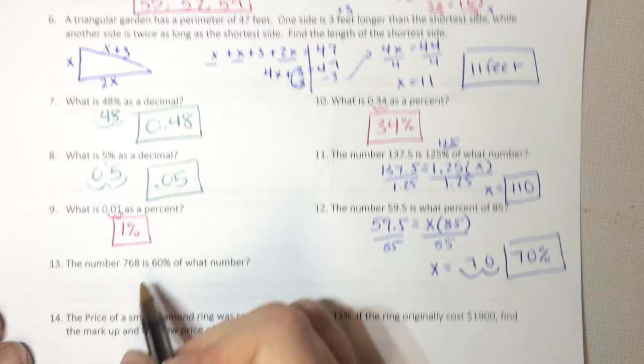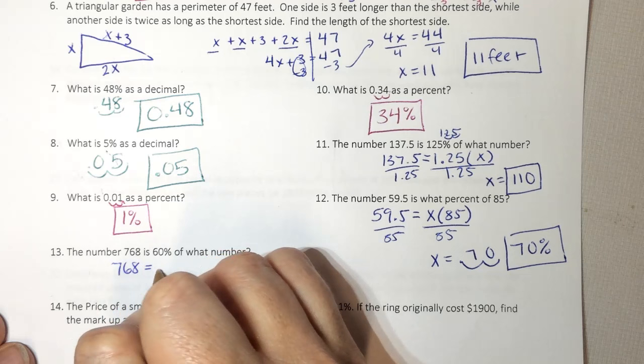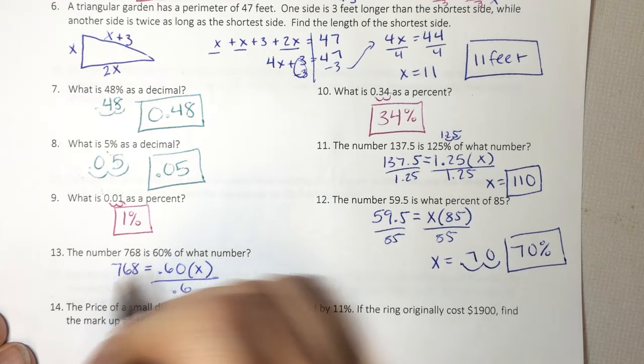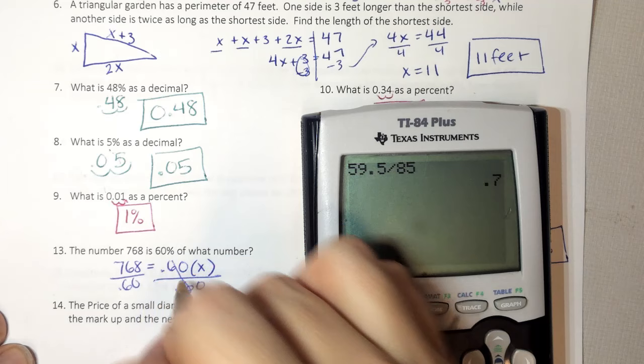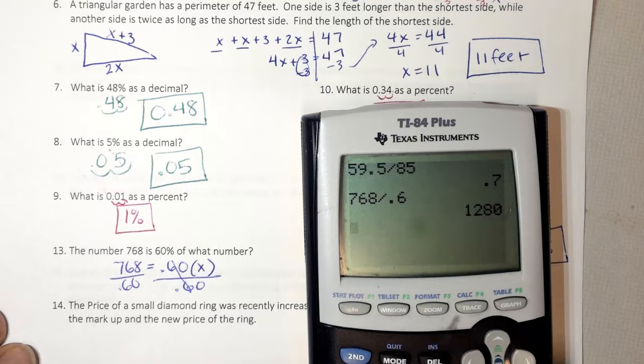The number 768 is 60% of what number? 768 is 60% as a decimal of multiply what number? Divide both sides by 0.6. This cancels and I get 768 divided by 0.6, which is 1,280.